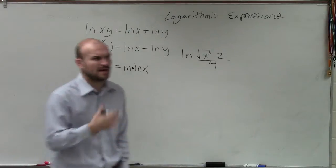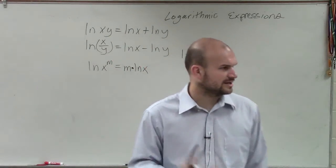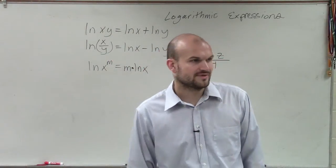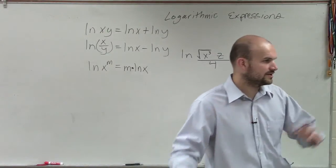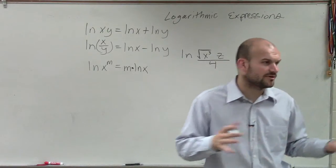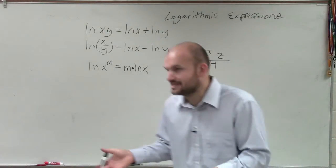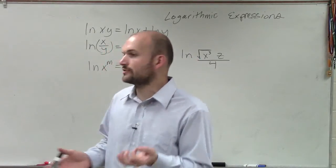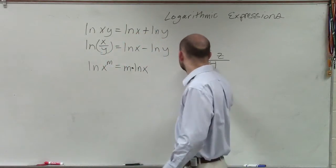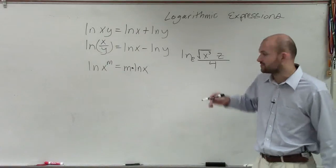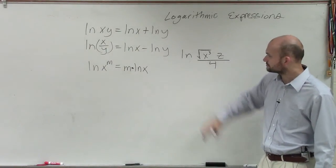Remember we talked about these with the properties of exponents? ln is a logarithm. It's what we call a natural logarithm where the base is e. But we just don't need to write it in there because we know the base is e.